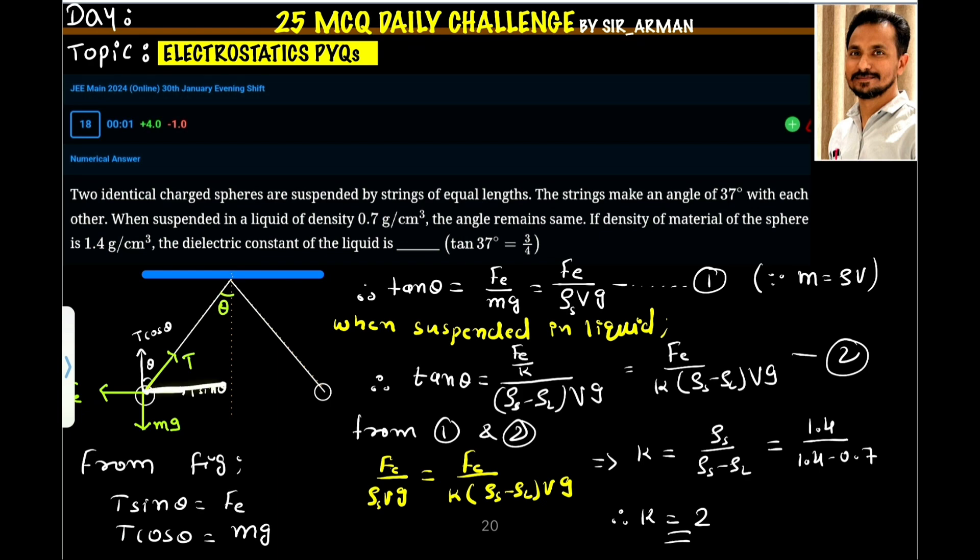The new electric force between the two spheres: if original is Fe in vacuum, then in medium it will become K times less. So the new electrostatic force is Fe by K.